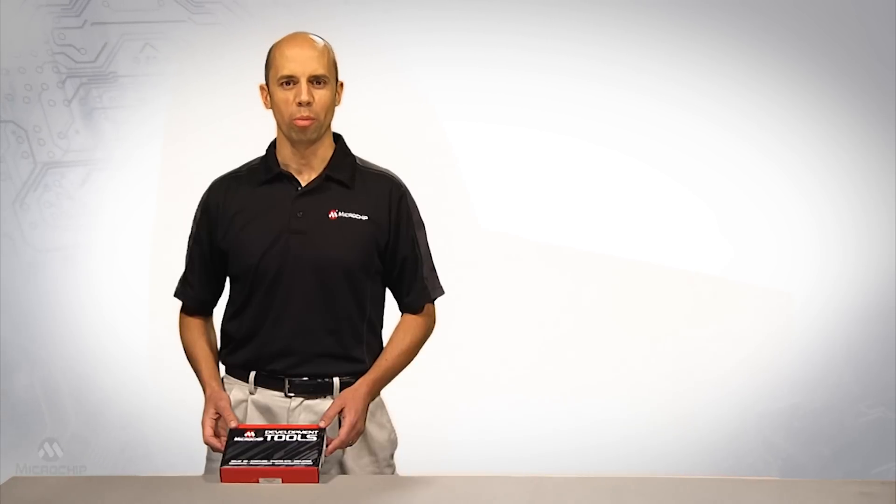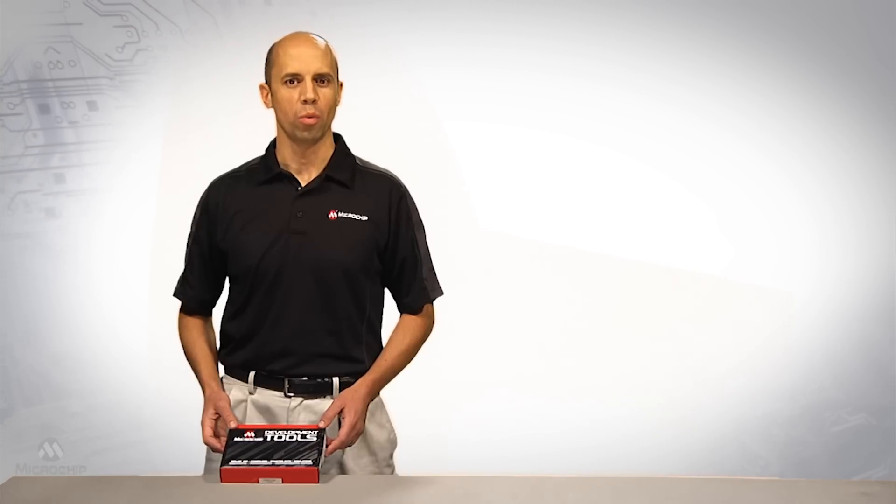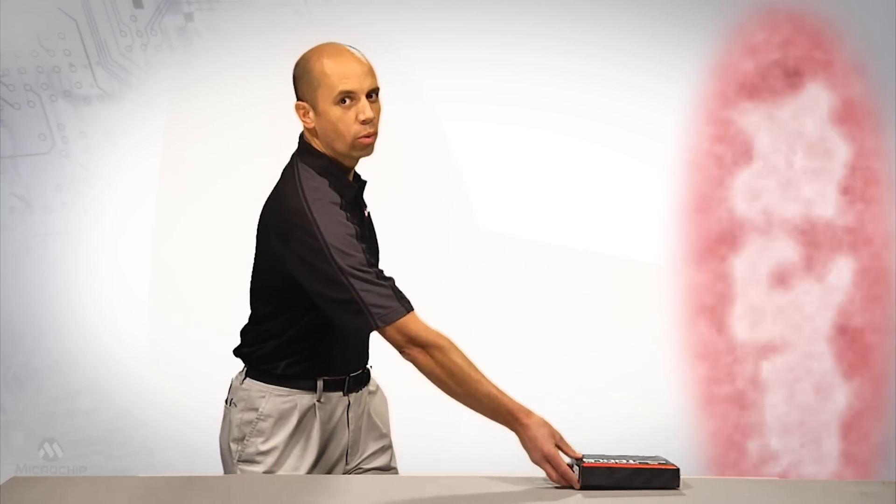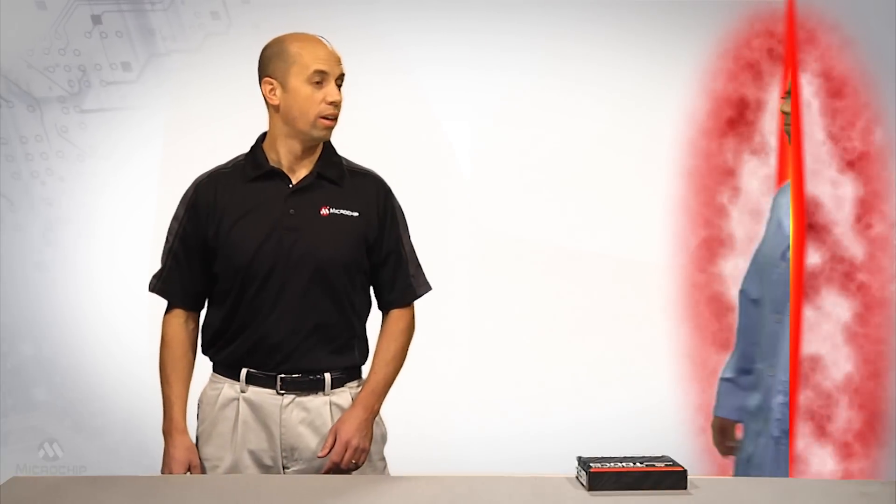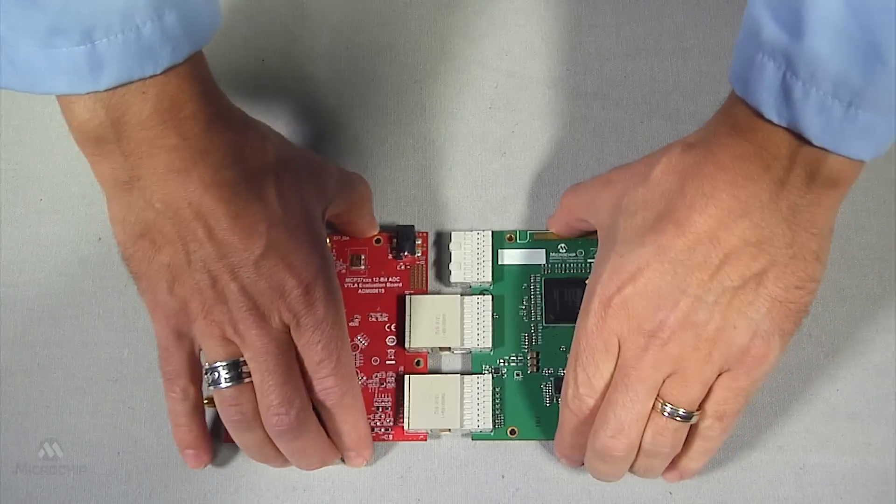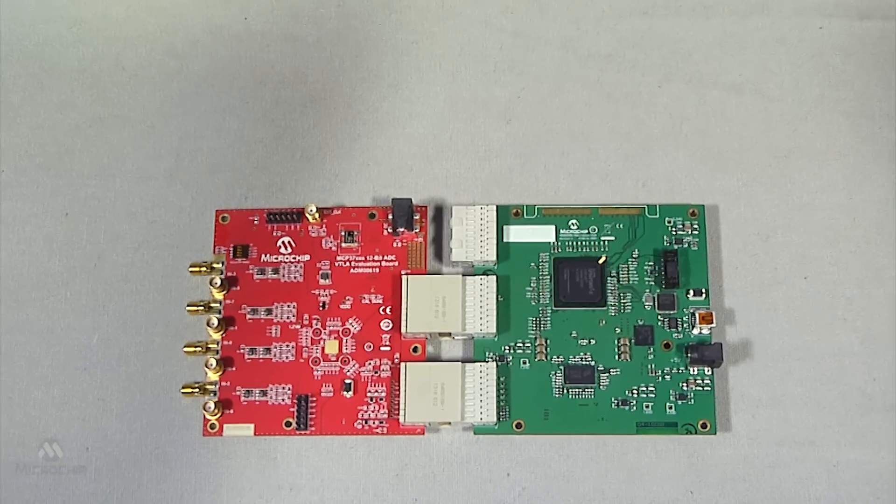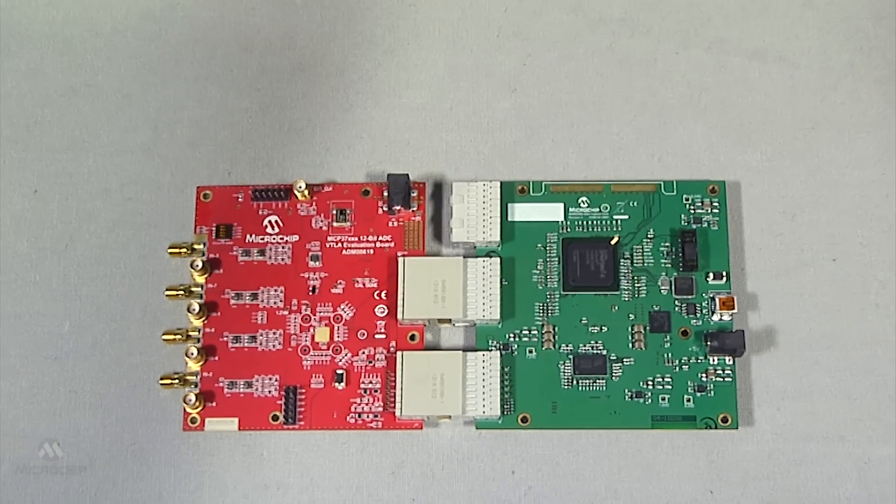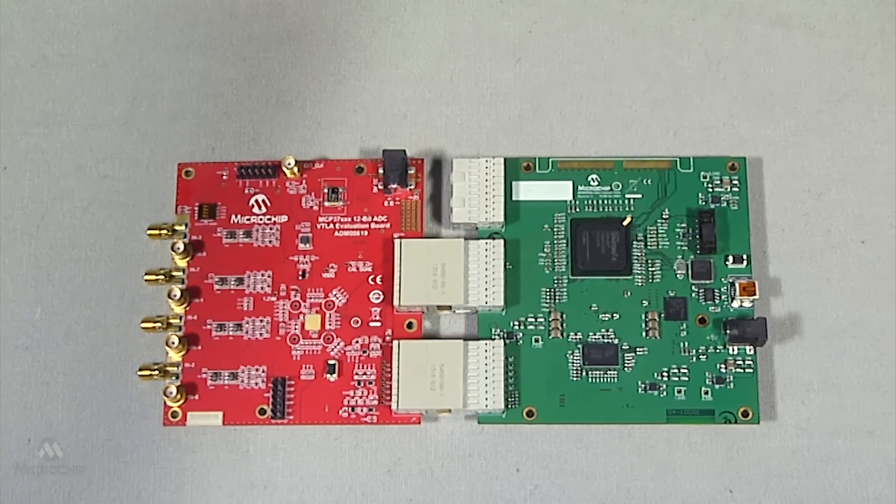To evaluate the performance of the MCP37D11-200 A to D converter, an easy-to-use evaluation tool is available. The MCP37XXX 12-bit evaluation board contains the A to D converter and sends the output data using the LVDS interface to the MCP37XXX data capture card. This board receives the data and makes it available through the USB interface to the computer.